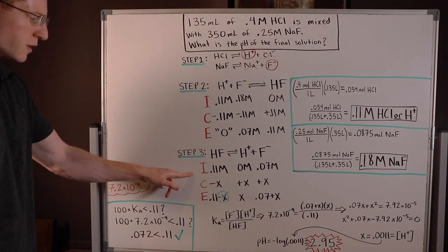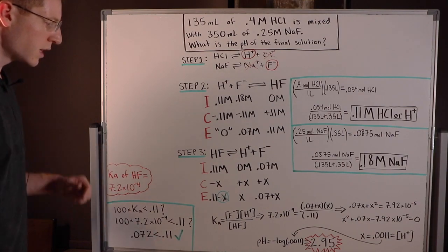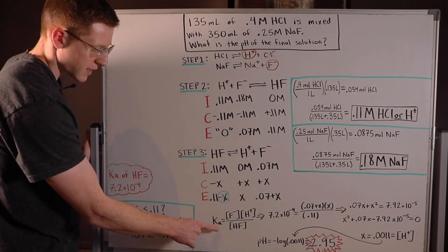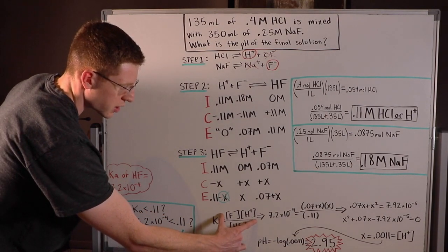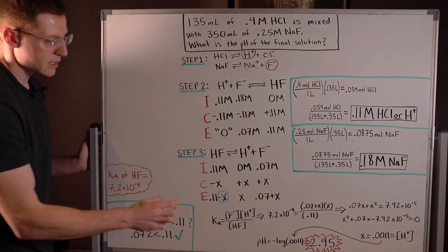So after step three, after you finish your ICE table, you're ready to set up your equilibrium expression. So since HF is an acid, it's actually a weak acid, we're going to set up a Ka here for our expression. And we know we're going to have concentration of our products, H plus and F minus, over concentration of our reactants, HF.